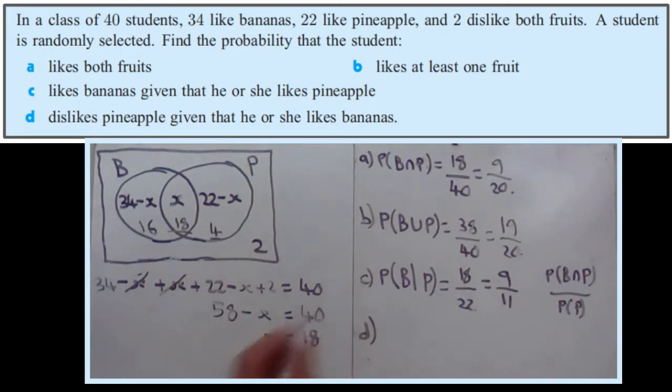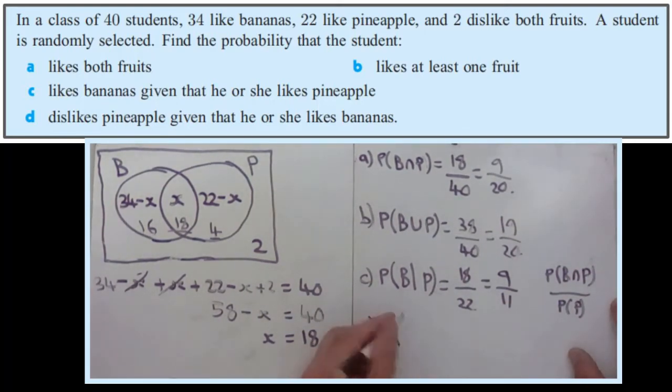So part D, probability that they dislike pineapples given that they like bananas. When I say dislike, we're talking not the apostrophe, the complement. So we're finding the probability they don't like pineapples. Probability they dislike pineapples given that they like bananas.